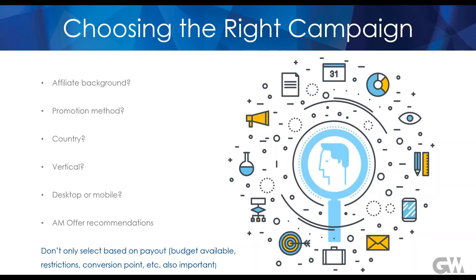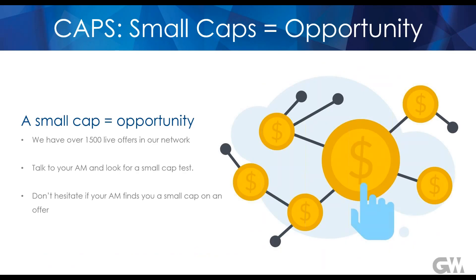It's easy to focus on only the payout for a campaign, but the conversion point is also very important. For example, an offer that pays ten dollars and converts on the third page might not perform as well as an offer that pays three dollars and converts on the first page. There are many variables that come into play when choosing an offer, and it really comes down to testing and the EPC it generates. Also be aware of restrictions in the offer card to ensure everything is compliant in terms of your traffic source and creative.